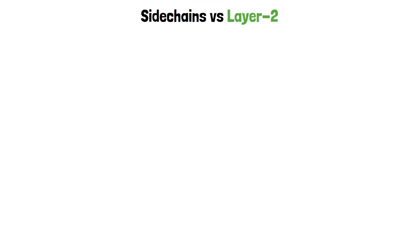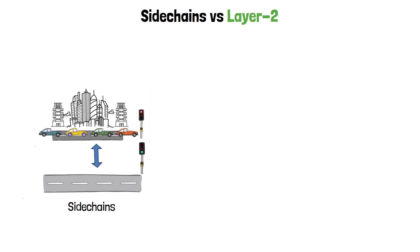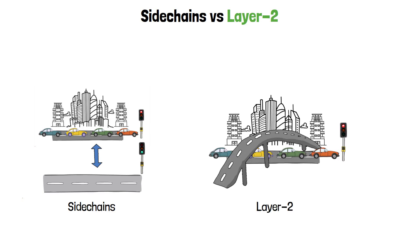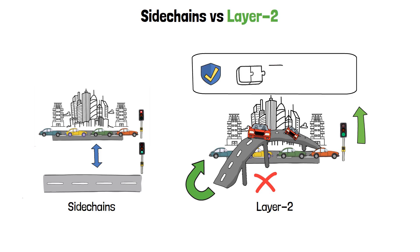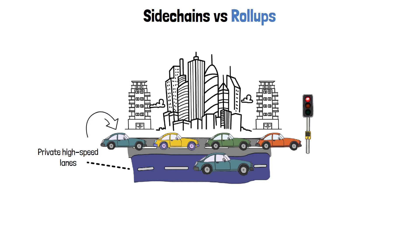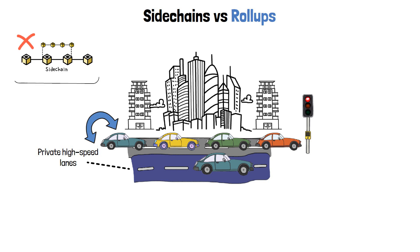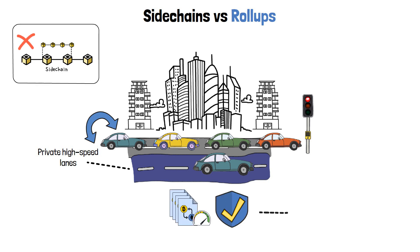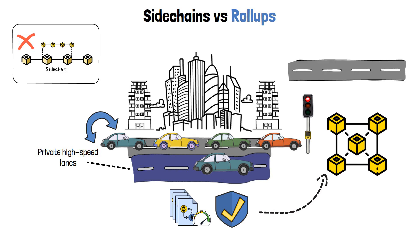Let's start with sidechains versus layer 2. If sidechains are like local roads running parallel to the main highway, then layer 2 solutions can be thought of as overpasses built directly on top of that highway. These overpasses don't replace the main road but enhance its capacity, allowing for a more efficient flow of traffic. Vehicles can enter this new layer, zoom ahead bypassing the congestion below, and then merge back onto the main highway. For rollups, picture them as private high-speed lanes within the main highway. Unlike sidechains, rollups focus on maximizing transaction throughput and security under the main blockchain's umbrella — it's a new lane, not an entirely new road.